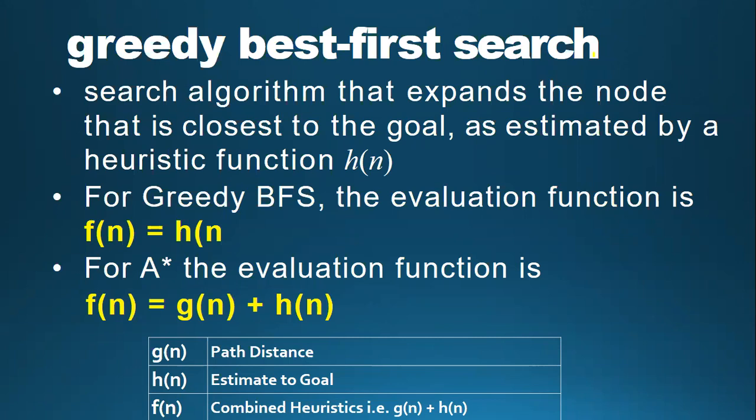The greedy best-first search is a type of best-first search. If we consider searching as a form of traversal in a graph, an uninformed search algorithm would blindly traverse to the next node without considering the cost associated with each step, because uninformed search does not know the path to reach the target. However, in informed search like the greedy best-first search, an evaluation function is used to decide which among the various available nodes is the most promising — that is, which will be the best path to reach the target before traversing to that node.